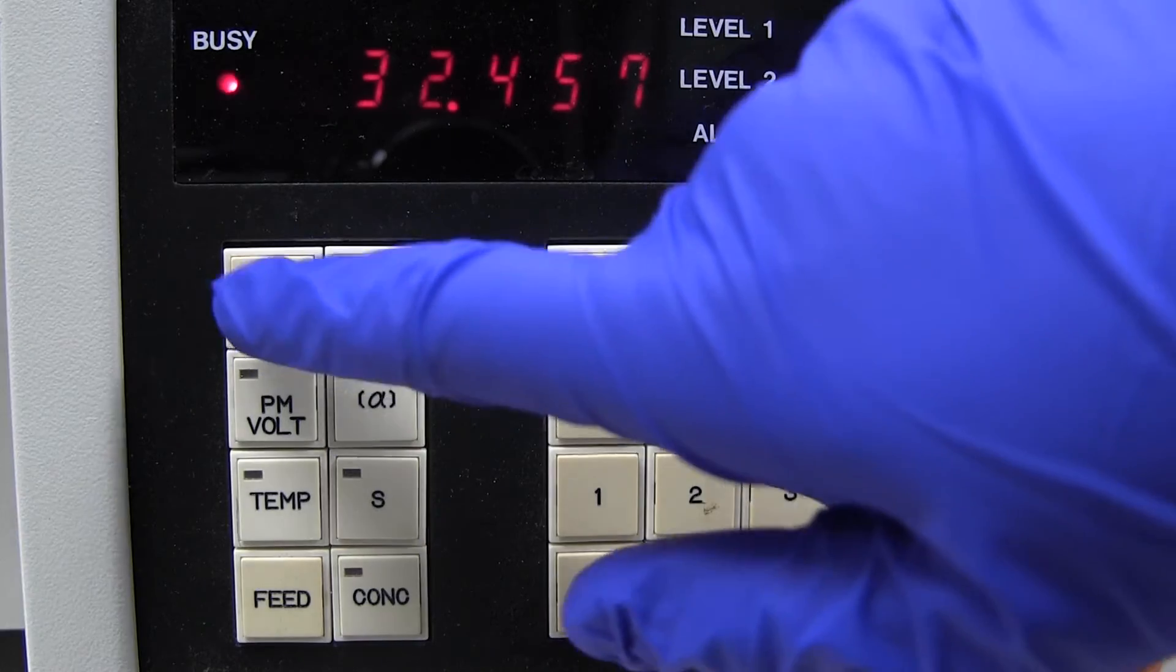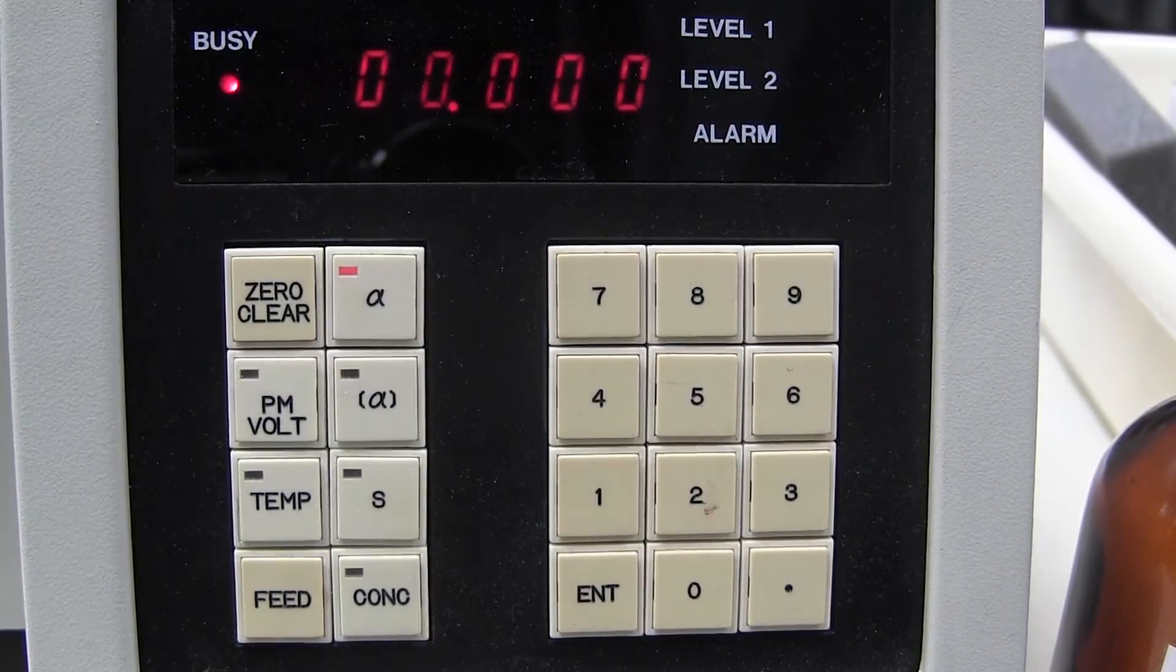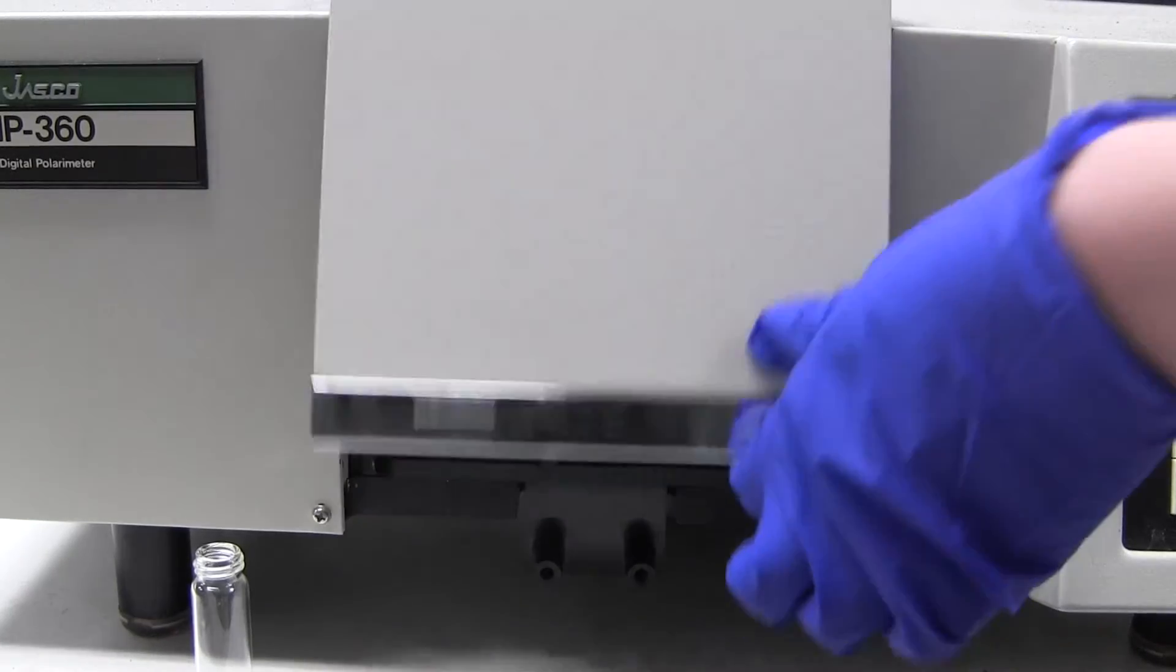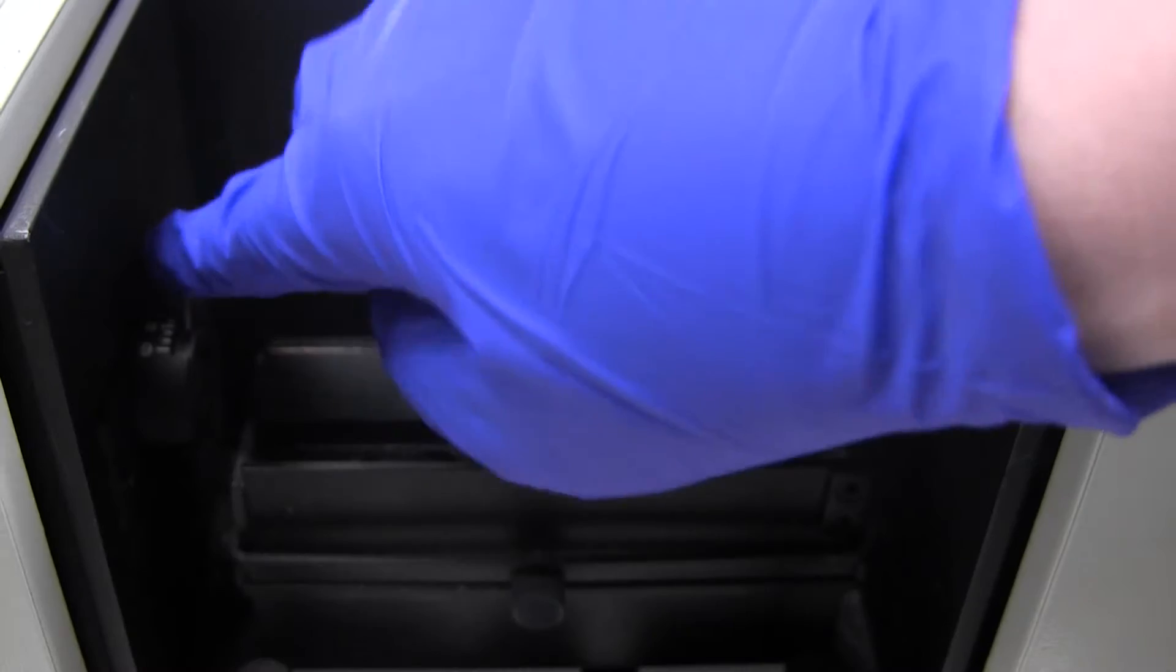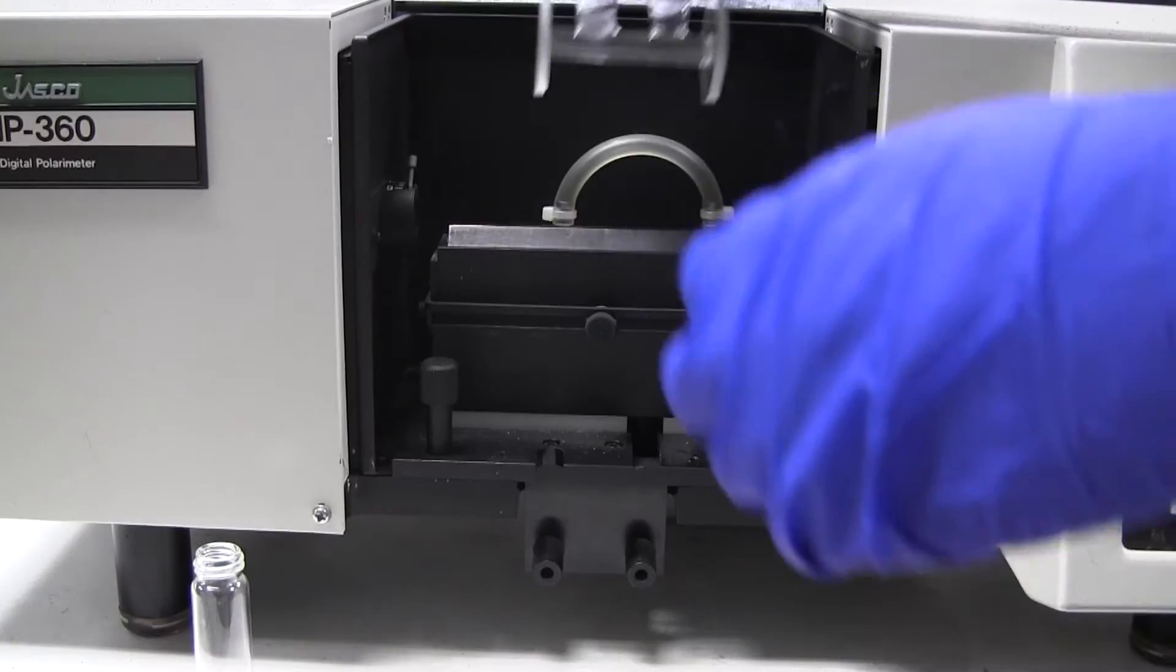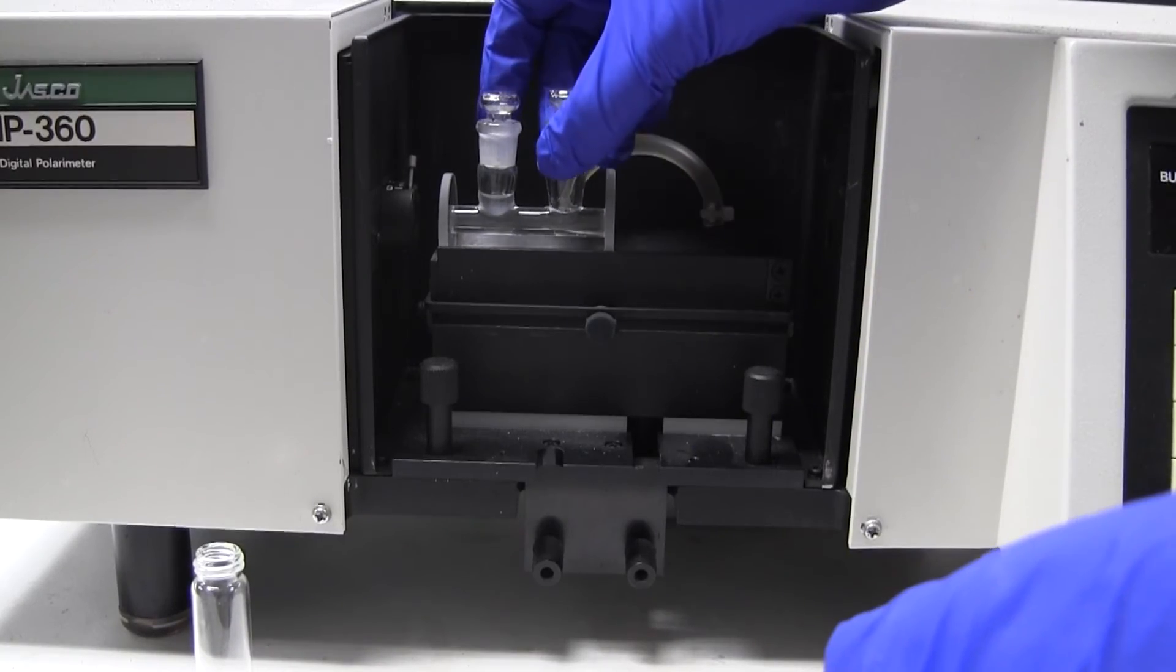Then press the zero/clear button on the instrument. Open the front compartment and make sure the slit adjustment is set to three. Place the cell into the instrument and slide it all of the way to the left.